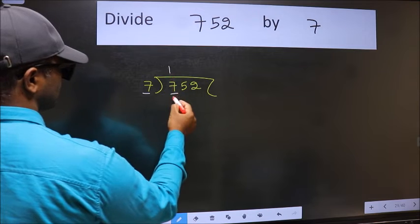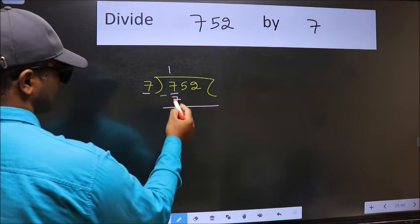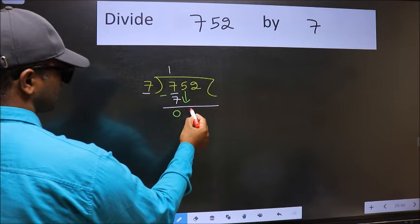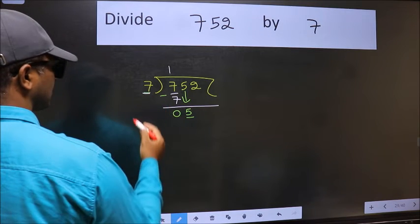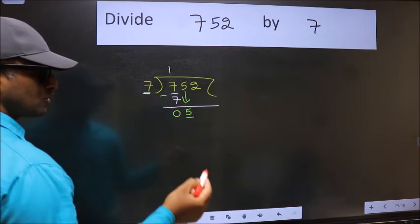Now we should subtract. We get zero. After this, bring down the beside number, so bring 5 down. Now here we have 5 and here 7. 5 is smaller than 7, so we should bring down the second number.